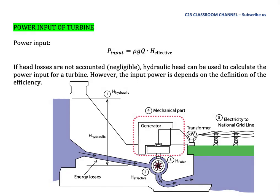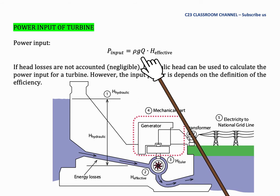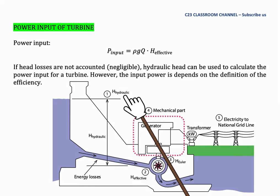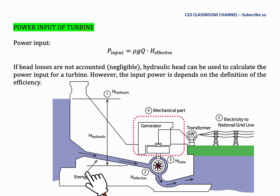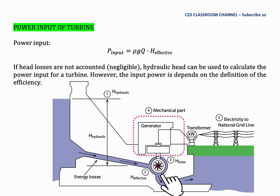Power input of the turbine can be written as P_input = ρGQH_effective. If head losses are not accounted for, hydraulic head can be used to calculate the power input for a turbine. However, the input power depends on the definition of efficiency. Normally, engineers will design a Francis turbine near to the dam in order to neglect the energy losses occurring inside the pipe system. If energy losses from the pipe system can be neglected, we could take the hydraulic head as the input power of the turbine.